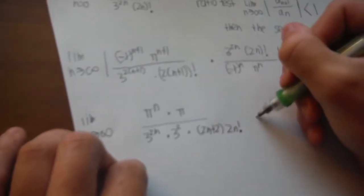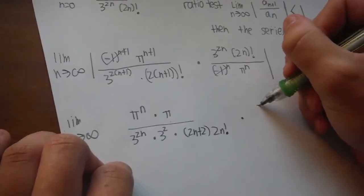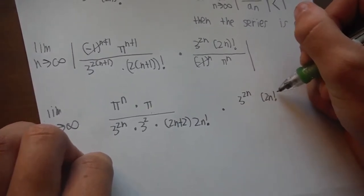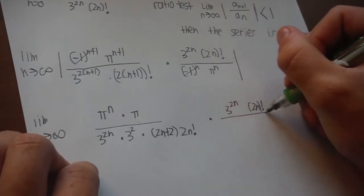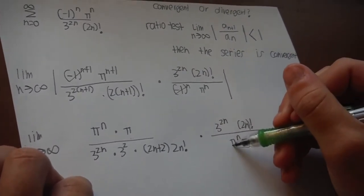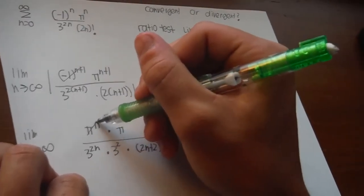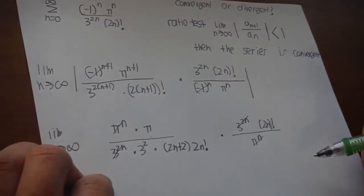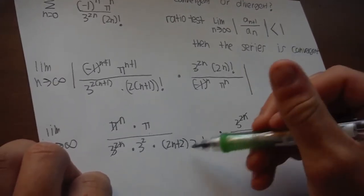But the factorial, you want to distribute that out again, so it's going to be 2n plus 2 times 2n factorial, times 3 to the 2n, times 2n factorial, over pi to the n.